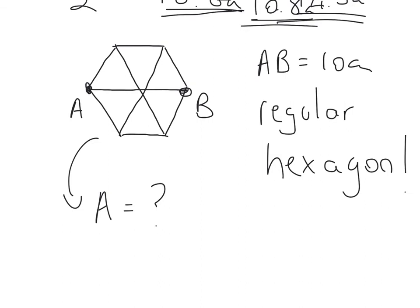Okay, this one, we've got a six-sided shape. It's a hexagon. We're told that AB, so the length AB, is 10 centimeters, and it's a regular hexagon. Now, a regular hexagon means that all the sides are the same length, and the angles are the same as well.